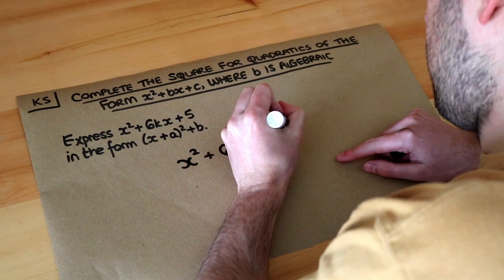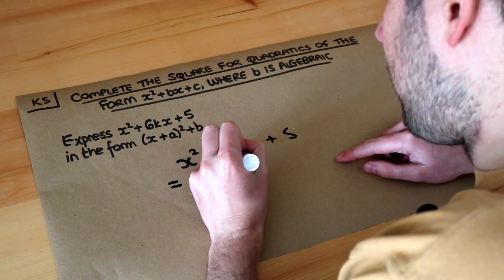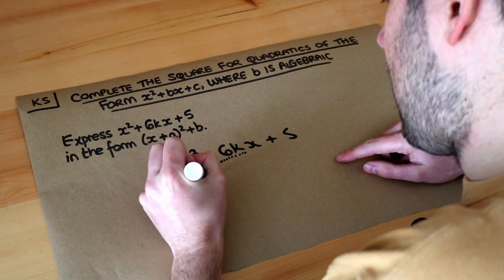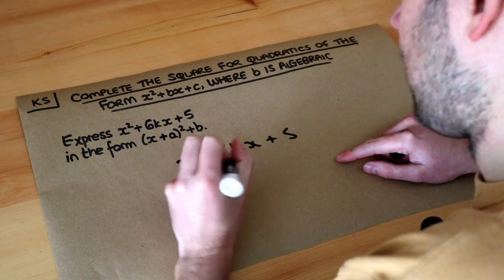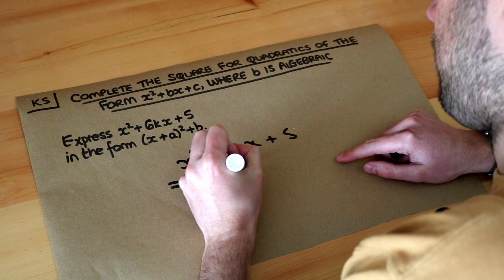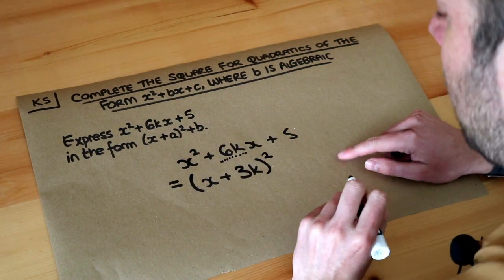Using the same method, we take the coefficient of the x term—the 6k—and write (x + half of this coefficient)². So half of 6k is 3k, giving us (x + 3k)².